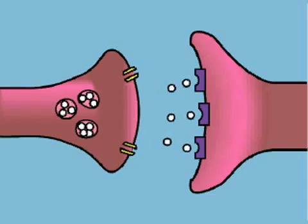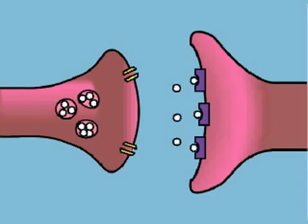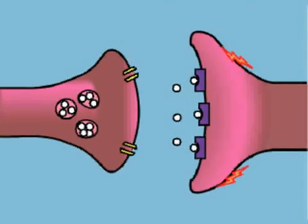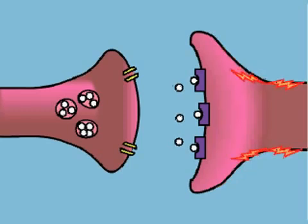They drift across the synaptic space and bind to special proteins called receptors on the postsynaptic neuron. The binding of a neurotransmitter to its receptor can trigger an action potential in the postsynaptic neuron.